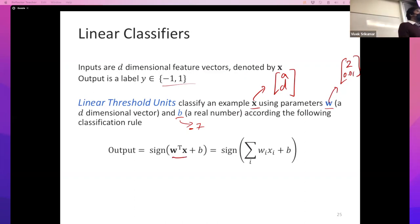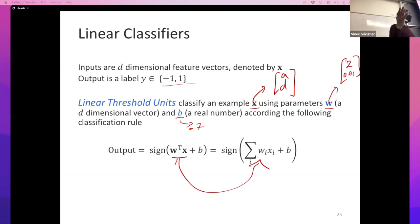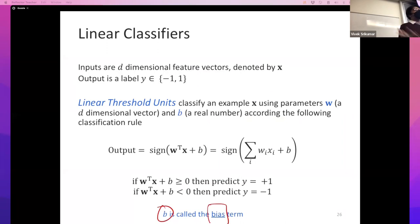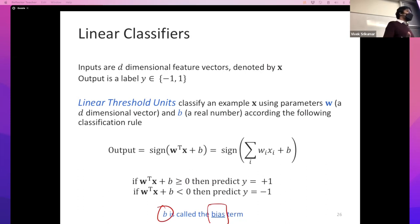Given an example, the linear threshold unit takes the dot product of w and x - you multiply every feature with its corresponding weight and add them up - then you add the bias term b, and you look at the sign of that number. If that number is positive you say plus one; if negative you say minus one. In other words, if w dot x plus b is greater than zero, you predict plus one, otherwise you predict minus one. The term b is called the bias term - when we talk about neural networks we'll see the exact same thing. I've defined the operation here but I haven't told you how to learn it yet.